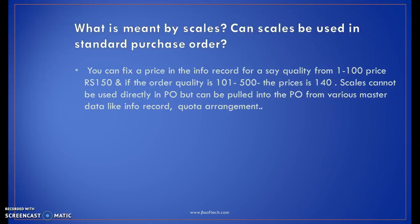What is meant by scales, and can scales be used in a standard purchase order? You can fix a price in the info record for a quantity from 1 to 100 at a price of Rs. 150, and if the order quantity is 101 to 500, the price is 140. So scales cannot be used directly in a PO, but can be pulled into the purchase order from master data like info record, quota arrangement, and so on. For example: 1 to 100 pieces at cost 150, and 101 to 500 at cost 140 — these are the scales we have in purchase orders.